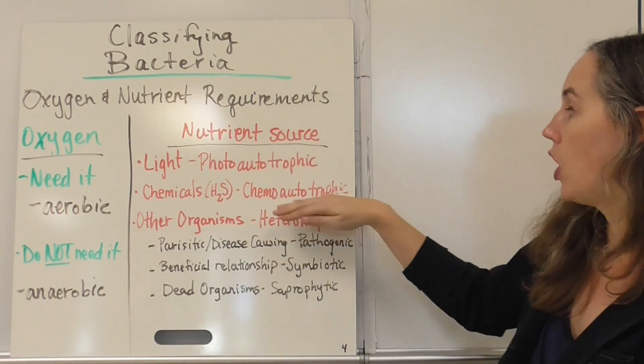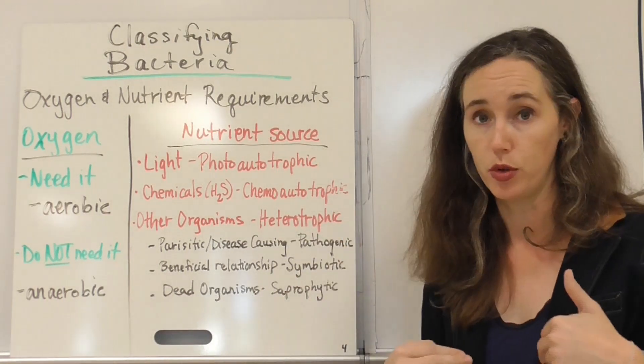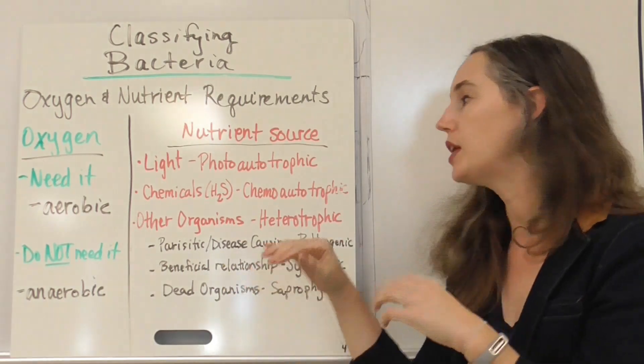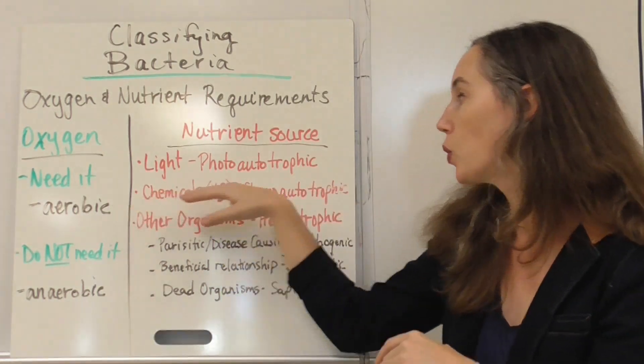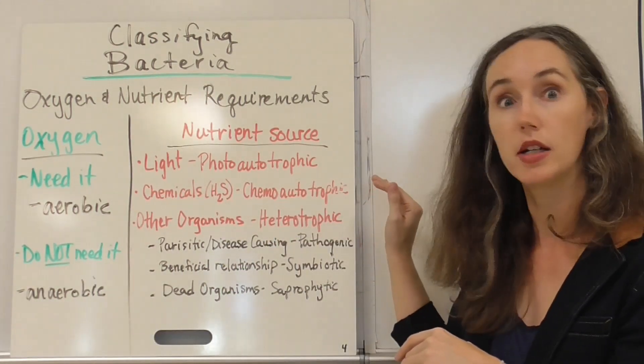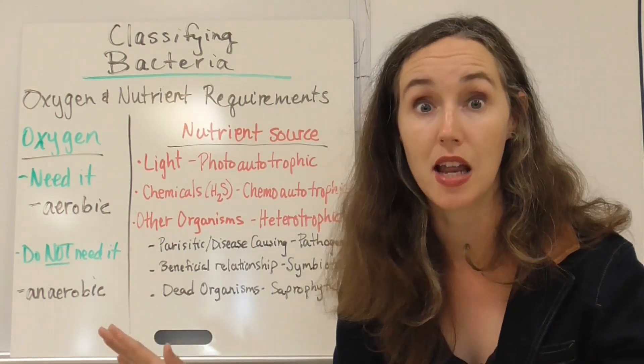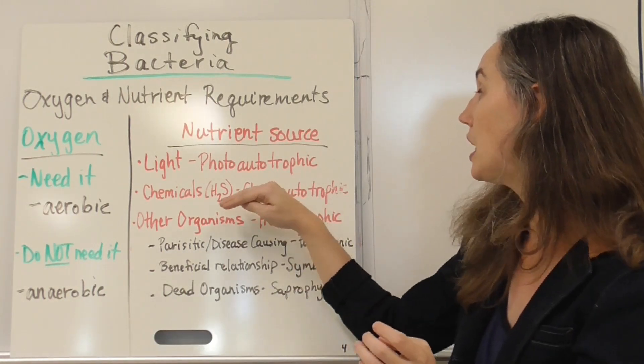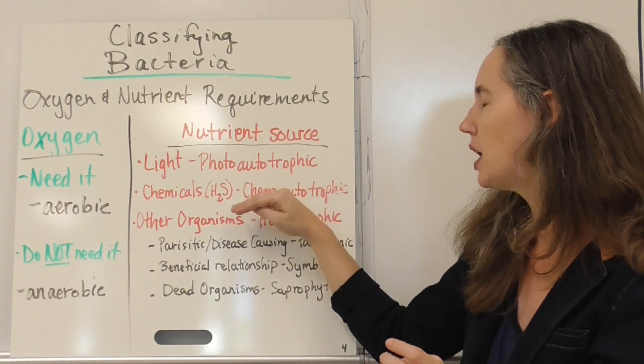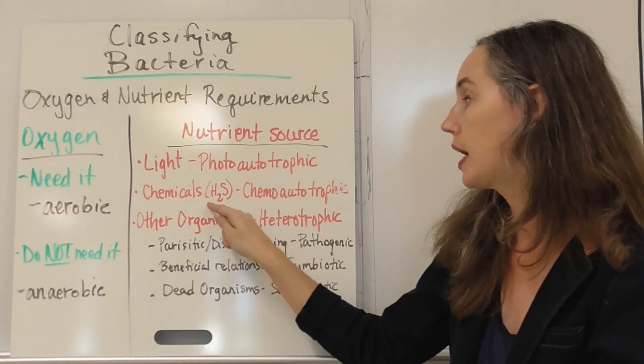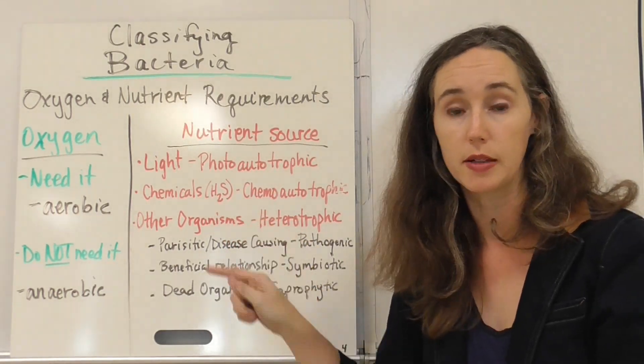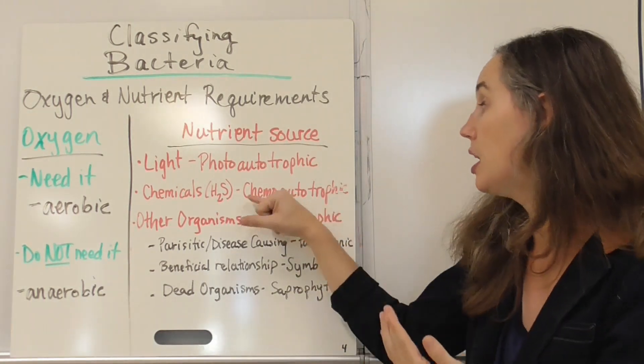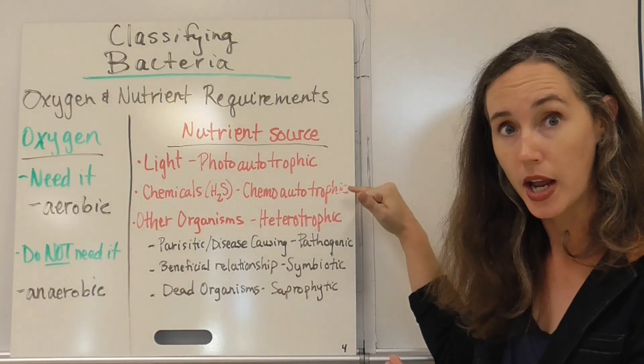Chemoautotrophic, so we have autotroph again, which means that they make their own food and they get that energy source from chemicals. Now these are often, these are like really crazy bacteria that can be found in places where light can never reach. So like the deep parts of the ocean. There are chemoautotrophic bacteria and they use energy from molecules like H2S, hydrogen sulfide that seeps out of the bottom of the ocean and they use those chemicals to make their own energy molecules.